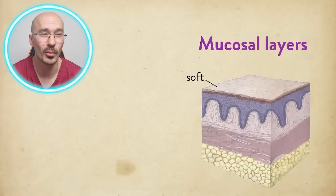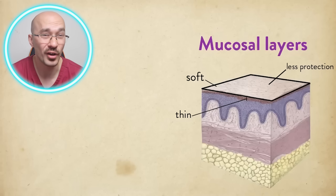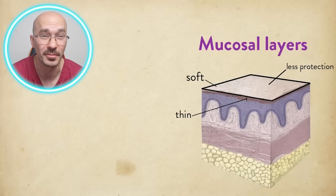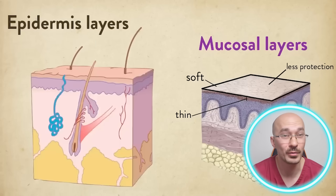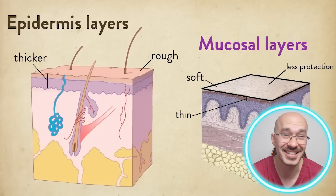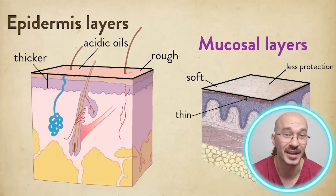If we look at your moist membranes, they tend to be soft, thin, and less protected, making less of a barrier to T. pallidum entering your body. Whereas your skin tends to be rough, thick, and actually has an acidic lining that can help to break down the T. pallidum bacteria.